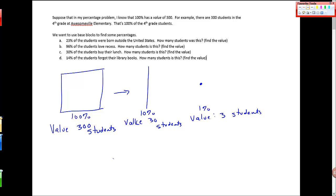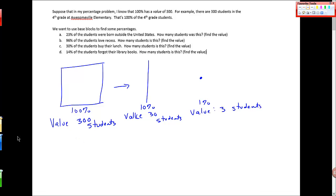So then when I think about questions around percent, it's less abstract and much more concrete than any other presentation I've ever seen. We want to use base blocks to find some of these percentages. So it says 23% of the students were born outside the U.S. So A, 23%, how many students is this? So I'm trying to find the value of 23% if I know the overall value of 100%, right?